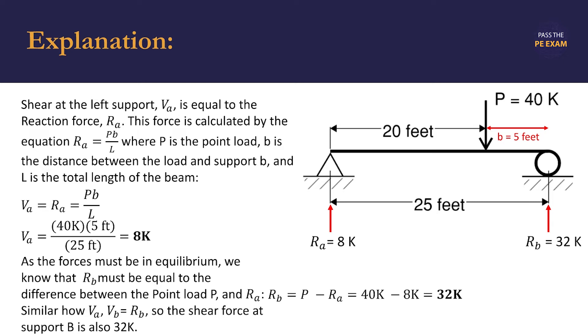We can check this using the process for point A: multiplying 40 kips by 20 feet and dividing by 25 feet. This check confirms that 32 kips is the correct value.